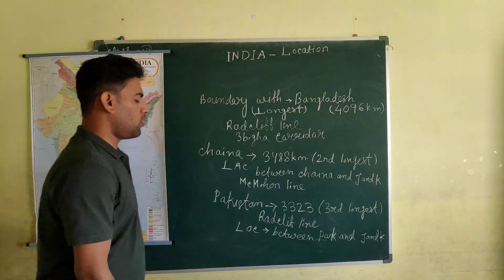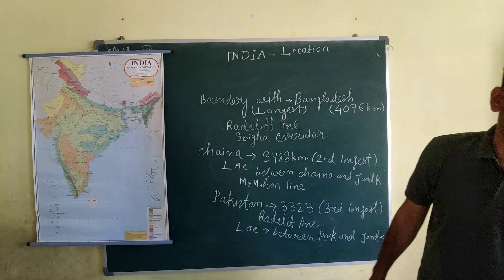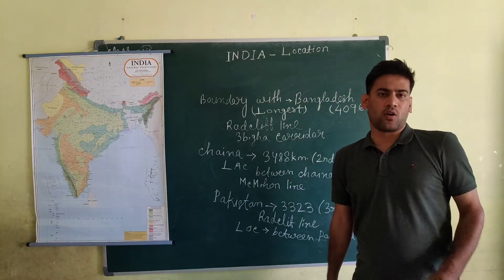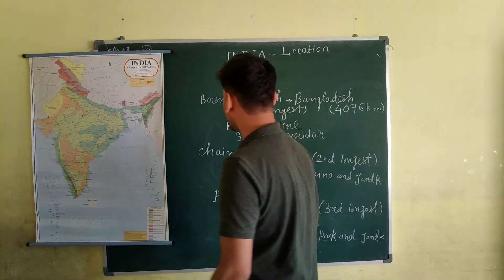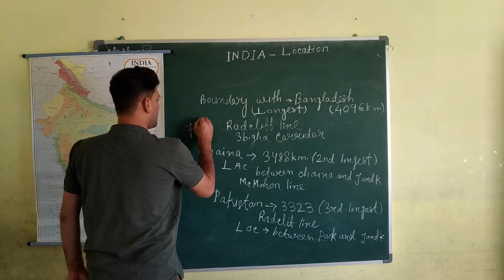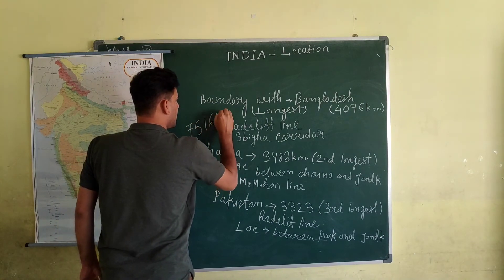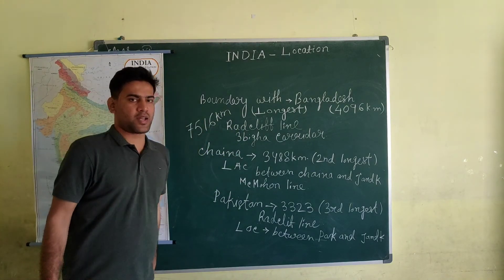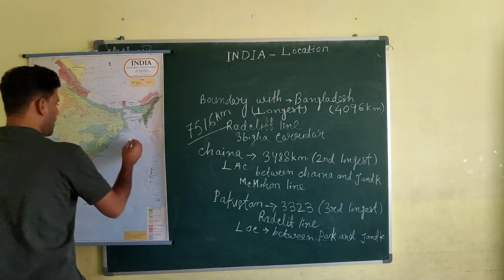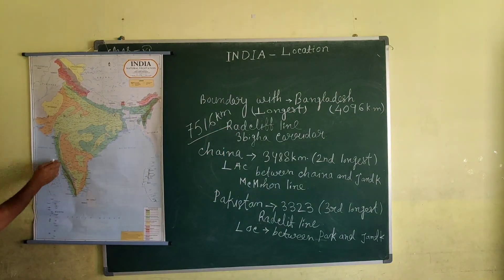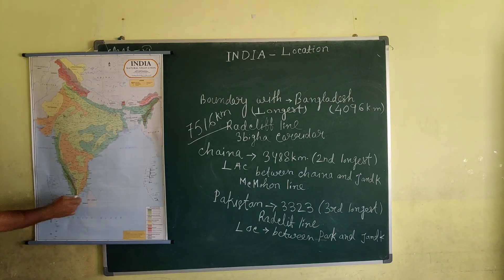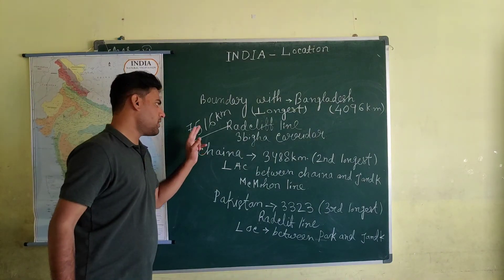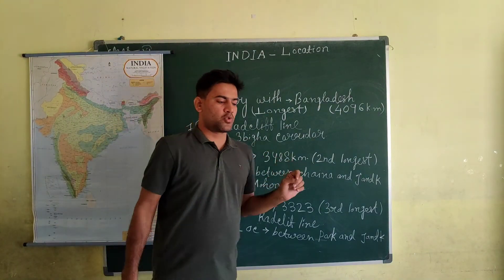There are coastal regions both in the eastern and western portions of India. The total distance of the coastline is about 7,516 km, running along both sides as you can see on the map.